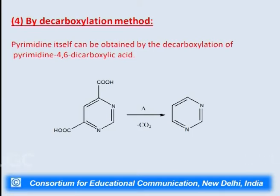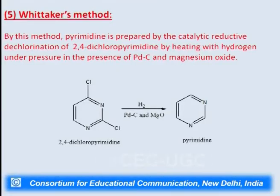Pyrimidine can also be prepared by decarboxylation. Pyrimidine itself can be obtained by the decarboxylation of pyrimidine-4,6-dicarboxylic acid. The two carboxylic acid groups, on heating in the presence of calcium oxide, lose two molecules of carbon dioxide to give pure pyrimidine. Further, pyrimidine can be prepared from Wittaker's method, which involves catalytic reduction followed by dechlorination of 2,4-dichloropyrimidine by heating with hydrogen under pressure in the presence of palladium charcoal and magnesium oxide. Dehalogenation takes place and we get the pyrimidine nucleus.